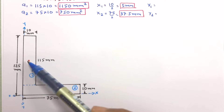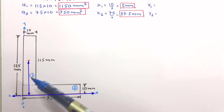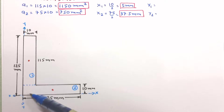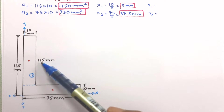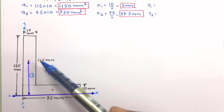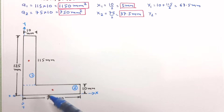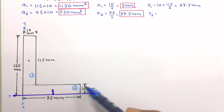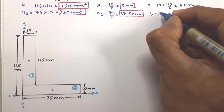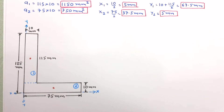y1 is the distance of the centroid of the first figure from the reference XX axis. This distance is 10 mm plus half of 115 mm, giving y1 = 67.5 mm. y2 is the distance of the centroid of the second figure from the reference XX axis, which is half of 10 mm, so y2 = 5 mm.